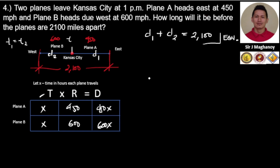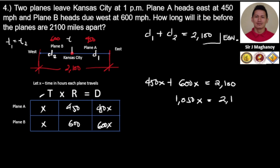Using our equation based on the given parameters, 450X plus 600X equals 2100. Combining like terms, this becomes 1050X equals 2100. Therefore, X equals 2100 divided by 1050, which equals 2.